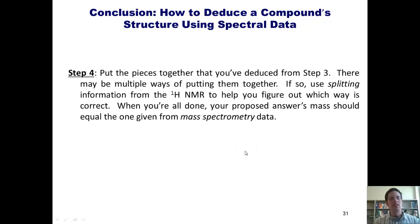Step four, put the pieces together that you've figured out from steps one through three. Now there may be multiple ways of putting them together. If so, then you use the splitting information to help figure out which way is correct. If there aren't multiple ways of putting those pieces together, then you really don't have to care about splitting, frankly. When you're all done, your proposed answer's mass should equal the one deduced from mass spectrometry data. Now I should tell you this step is the one that I personally like to call playing with Legos. You'll see why.